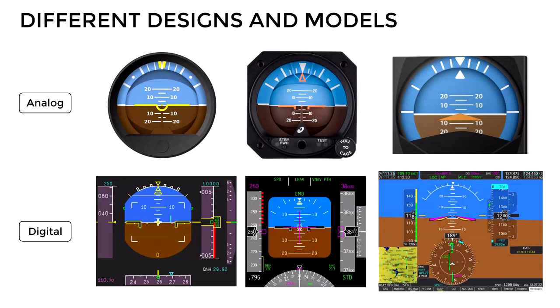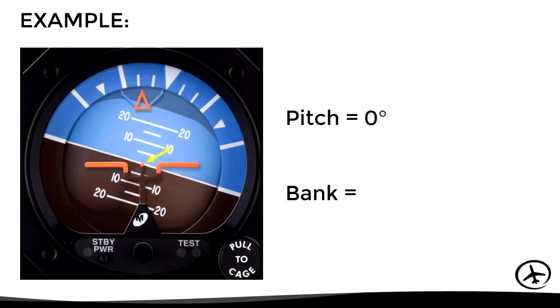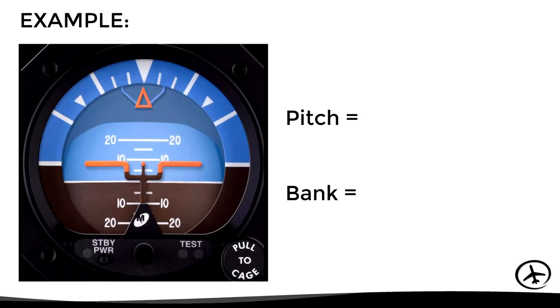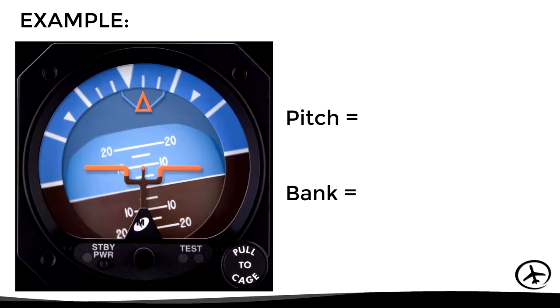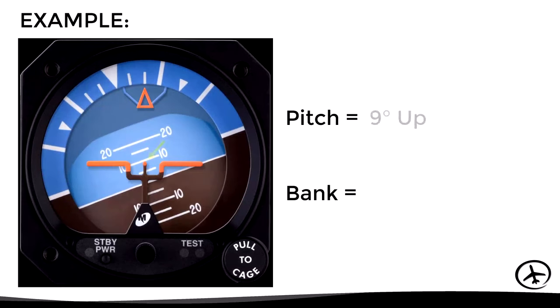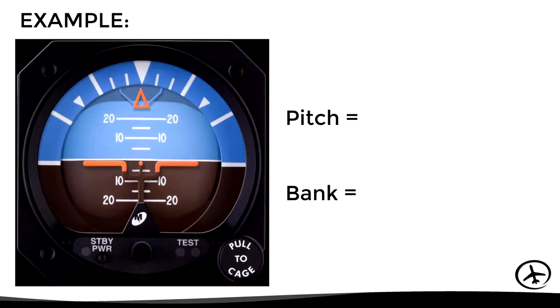There are different models and designs of the attitude indicator — both analog and digital — and although they have slight differences, the information they provide is the same. For example: a pitch of 0 degrees and a bank angle of 18 degrees to the left; a pitch of 8 degrees nose up and a bank of 0 degrees; a pitch of 9 degrees nose up and a bank of 10 degrees to the right; a pitch of 9 degrees nose up and a bank of 20 degrees to the right; and a pitch of 2 degrees nose down with a bank of 0 degrees.